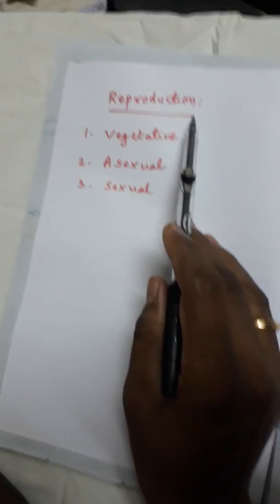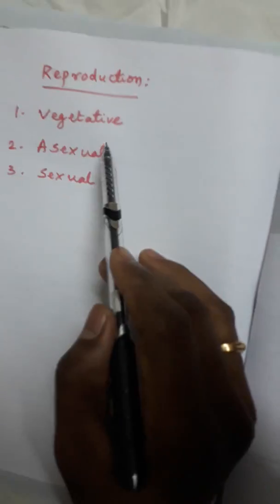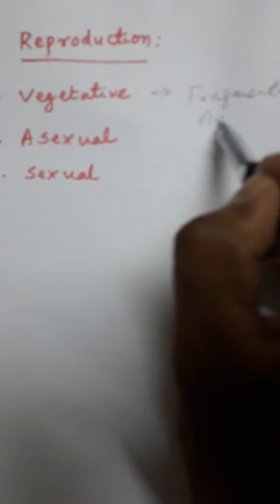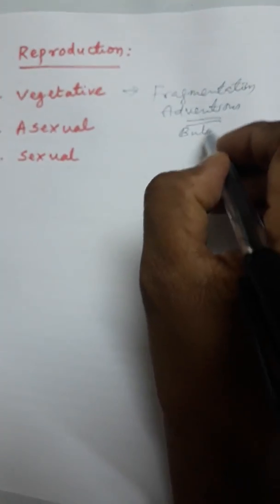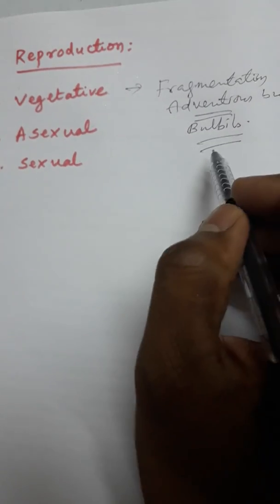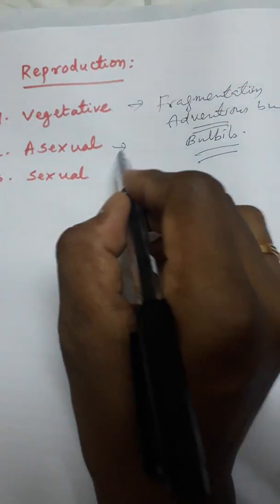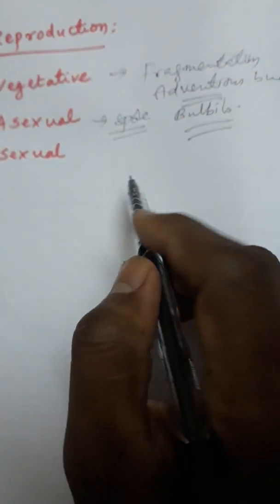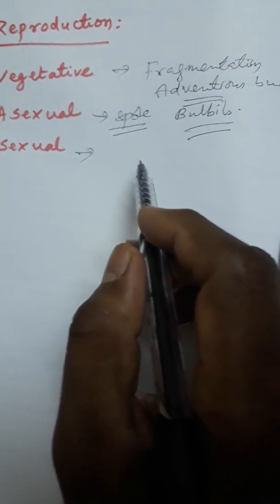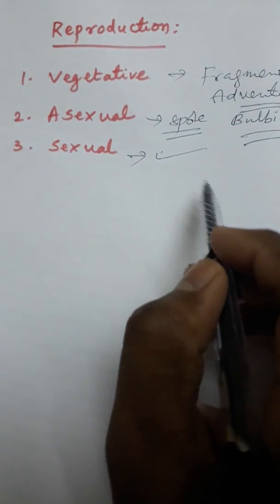Lycopodium reproduction is performed by three methods: vegetative reproduction, asexual, and sexual. Vegetative reproduction is by fragmentation, adventitious roots, or bulbils. Asexual reproduction is by homospores. Sexual reproduction involves antheridium and archegonium — chemotactic sexual reproduction takes place.